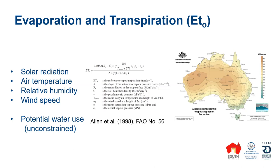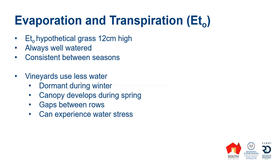Note that I say 'potential' — this is the unconstrained use, meaning the vines aren't exposed to any water stress. Evapotranspiration is calculated for a hypothetical well-watered grass paddock, 12 centimetres high. I'm always surprised at how consistent these evapotranspiration values are between seasons, and that's one of the strengths of using this system — we can look forward for the season and have a reasonably good idea what the evapotranspiration is likely to be. It's certainly a lot more consistent than the other main parameter driving our water budget, which is rainfall.